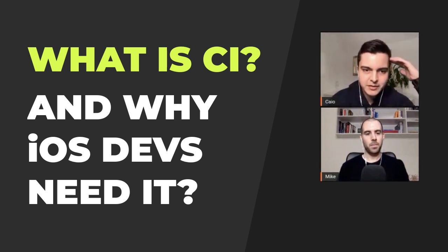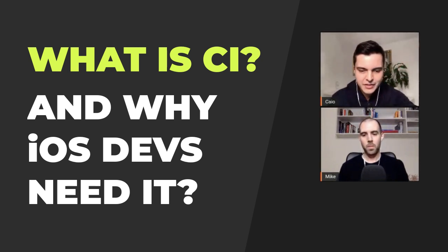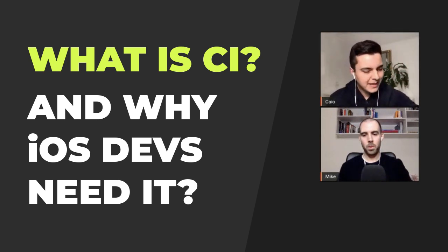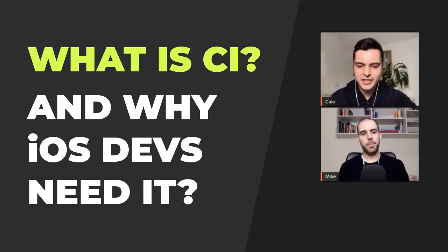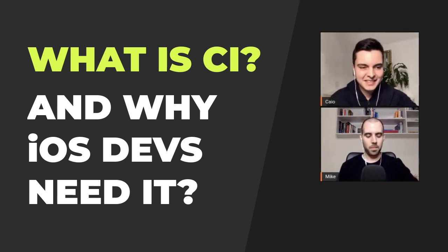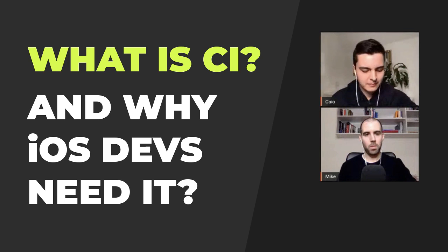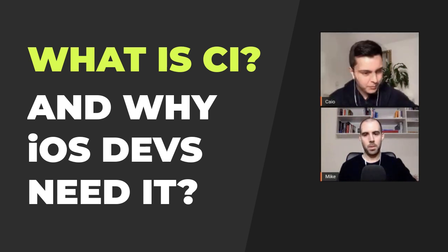CI is short for continuous integration. It's the practice of merging code — merging your work into a main branch with great speed and frequency. Several times a day, instead of having long-lived branches for weeks and months, you're continually merging your work with other developers with great speed and frequency.